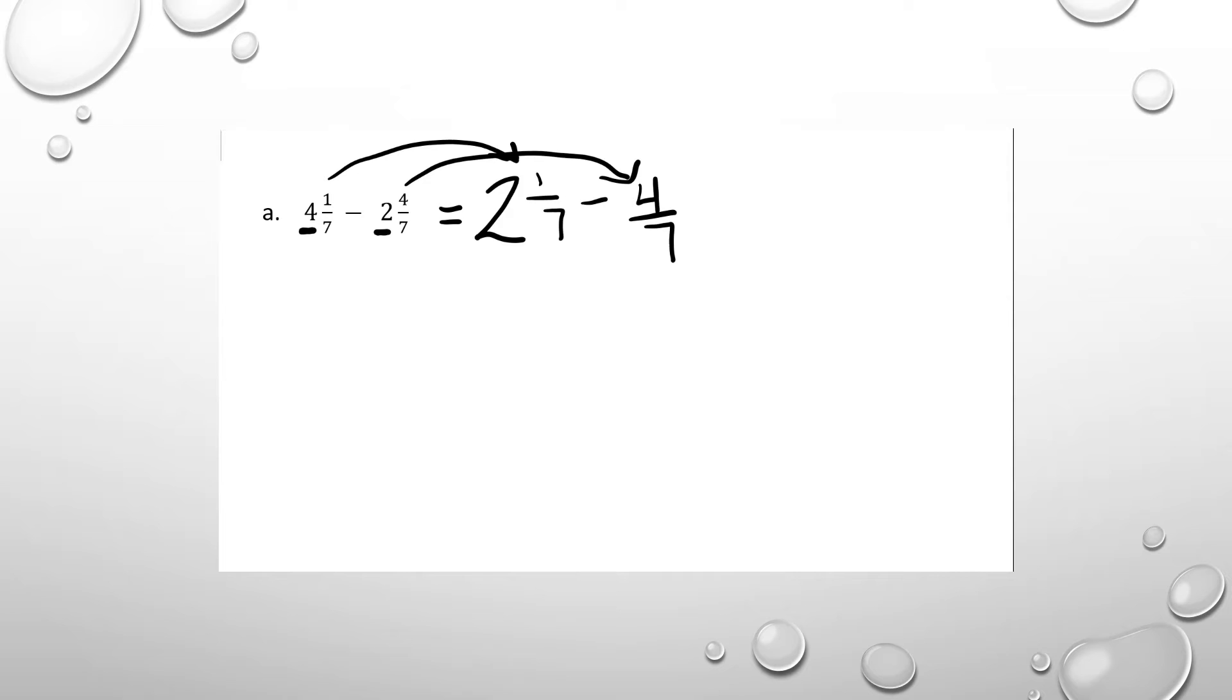From here, we use our arrow method and use our number bond to break apart 4/7 to get to a whole number.